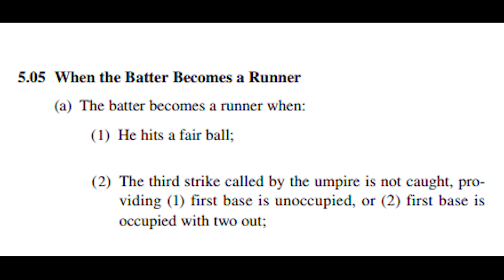Let's read the relevant rule. The batter becomes a runner when he hits a fair ball, or when the third strike called by the umpire is not caught, providing first base is unoccupied or first base is occupied with two outs.